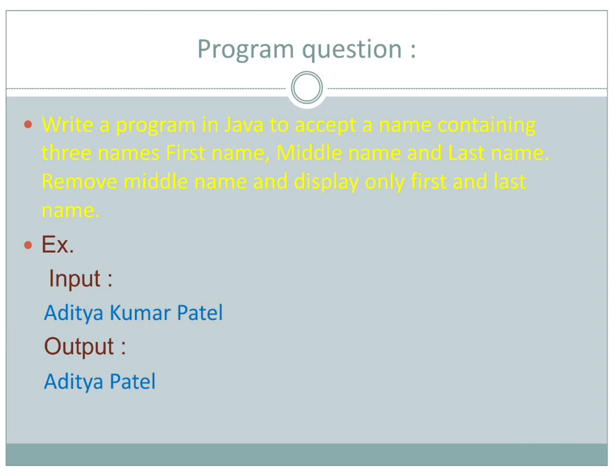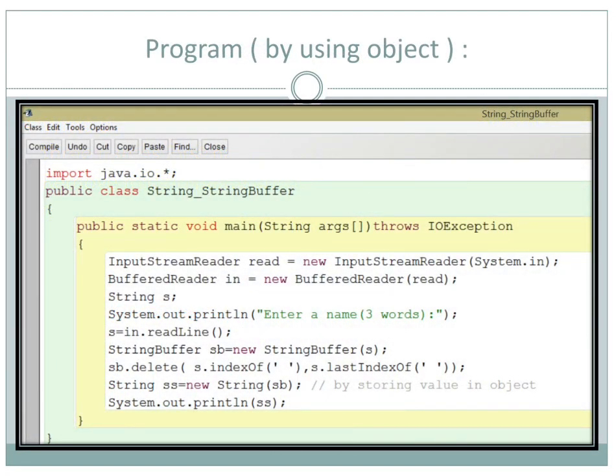Now with the next program I want to show how we use String and StringBuffer together through object creation. Write a program in Java to accept a name containing three parts - first name, middle name, and last name - then remove the middle name and display only the first and last name. For example, if we provide 'Aditya Kumar Patel', we want 'Aditya Patel' - we need to remove 'Kumar' from the middle.